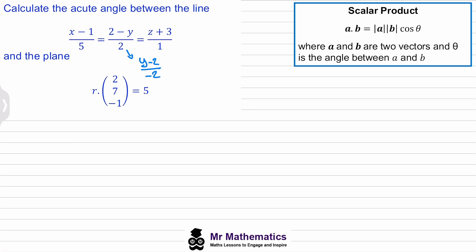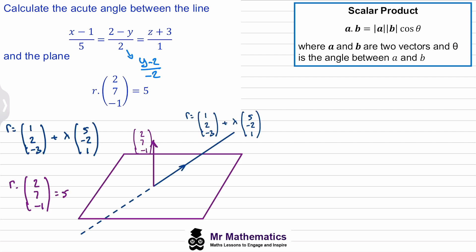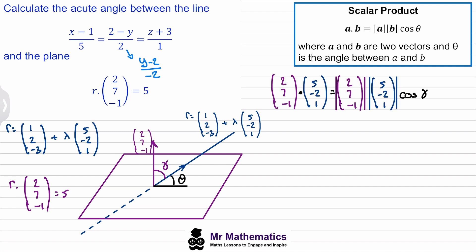Welcome back if you had a go. Again, the first thing we're going to do is sketch a diagram showing the line passing through the plane. We have our plane with a normal vector and our line, and I've given the equation in parametric form where lambda is our parameter. We want to work out the angle theta between the plane and the line. We can use the scalar product rule to find the angle alpha between the two vectors. Vector A will be the direction of the normal vector, and B will be the direction of the line. Then we can work out the magnitude of each of them.